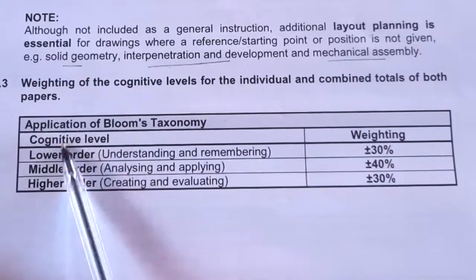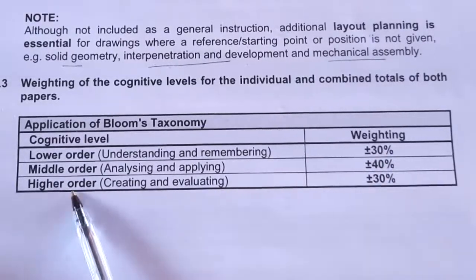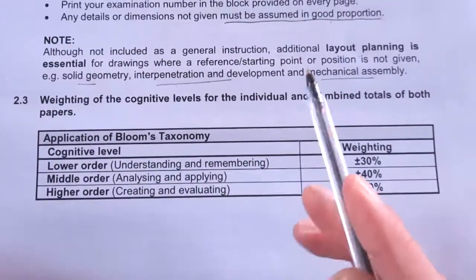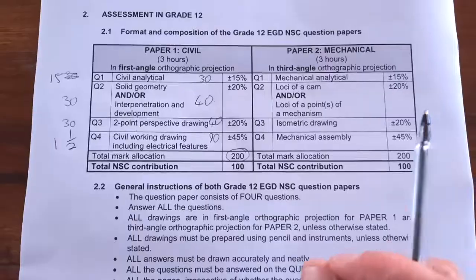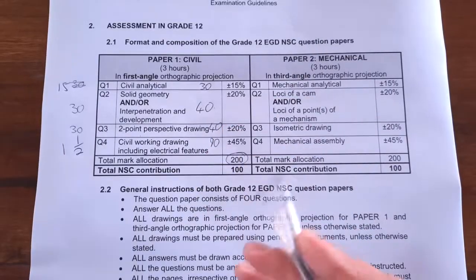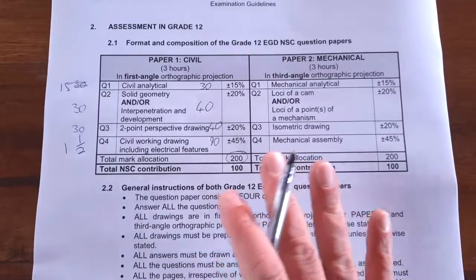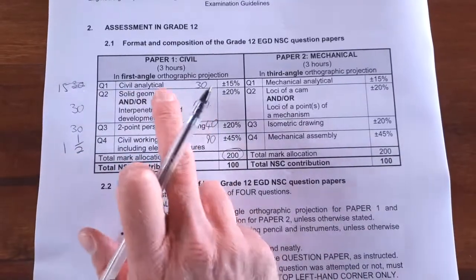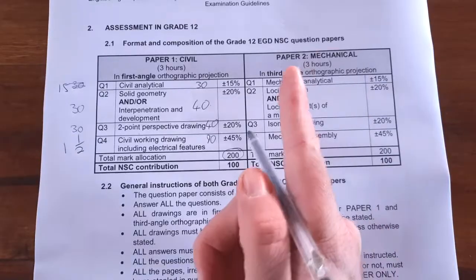The cognitive levels tested are: lower order — understanding and remembering — at 30%; middle order at 40%; and higher order — problem solving, evaluating, and creating — at 30%. One last tip: teachers often pressure you about neatness, but in the final exam, neatness counts for nothing if you don't get the correct lines drawn and the drawings completed. Focus on accuracy and completion over neatness. Next video we'll look at Paper 1, specifically the civil analytics, and then individual videos for each drawing type — so be sure to like, share, and subscribe.